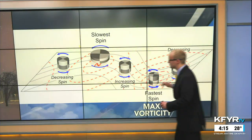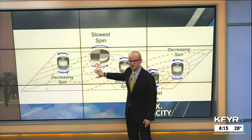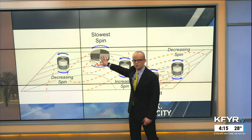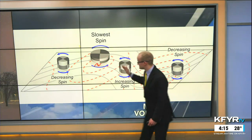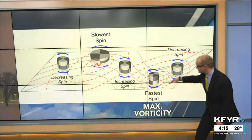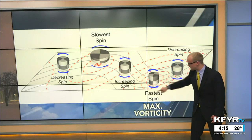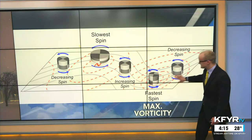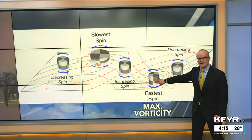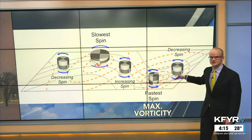To summarize: in the ridges of the jet stream we have generally calmer weather with lower spin and not much vorticity, because of the jet stream's curvature. Whereas where the jet stream really dips down into troughs, that's where spin is maximized, vorticity is maximized, and that's where we generally see storm systems form and really intensify as they come out of those troughs or dips in the jet stream.